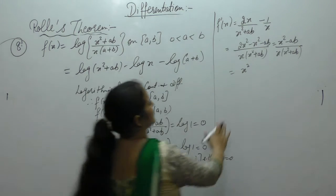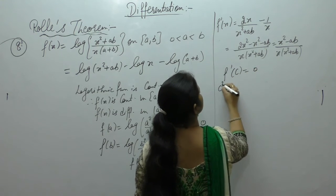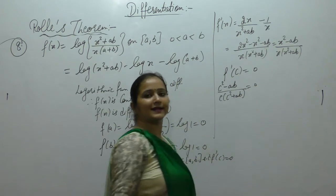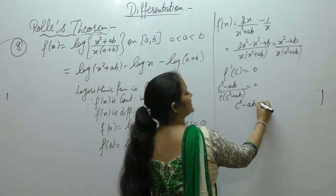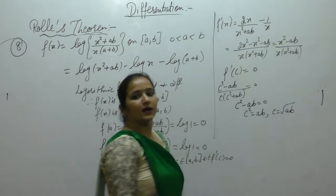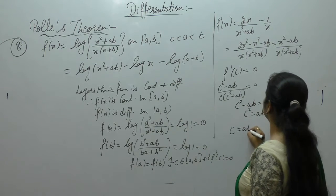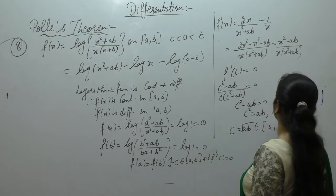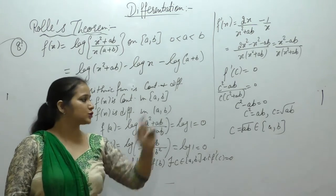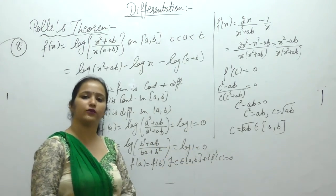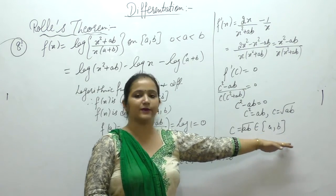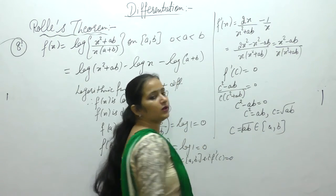Setting f'(c) = 0: (c²-ab)/(c(c²+ab)) = 0, so c² = ab, giving c = √(ab). For example, if a=1 and b=2, then √(1·2) = √2 ≈ 1.414, which lies between 1 and 2. Therefore √(ab) lies between a and b, so c = √(ab) belongs to (a,b) and Rolle's theorem is verified.